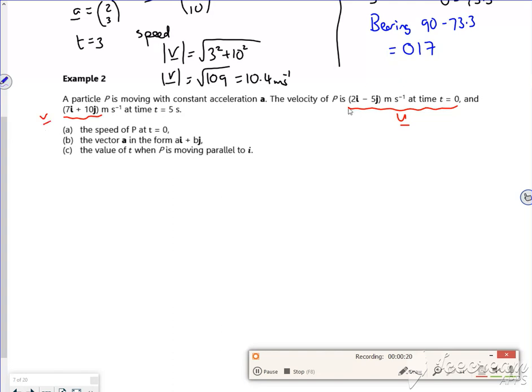Right, so it wants the speed at time t equals 0. So I'm looking at that initial velocity, and my speed, remember, is just the magnitude of the velocity. So that's 2 squared plus minus 5 squared, which is root 29, which is 5.39 meters per second.